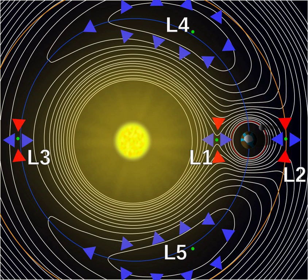A halo orbit is a periodic, three-dimensional orbit near the L1, L2 or L3 Lagrange point in the three-body problem of orbital mechanics.